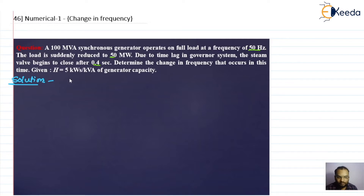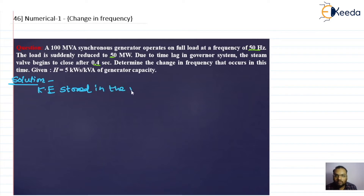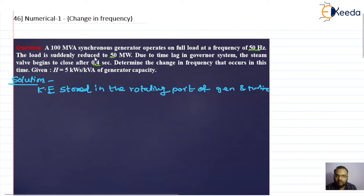The kinetic energy is stored in the rotating parts of the generator and turbine. We denote this as Wke — the kinetic energy stored in the rotating part of the generator and turbine.